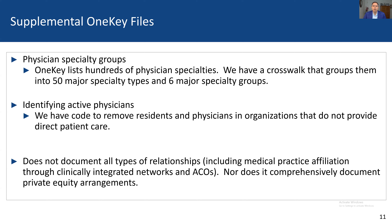We have 1.1 million physicians, but if you're interested in active physicians delivering outpatient care — for instance, providers relevant to an insurance company building a provider network — you'd want to exclude providers in correctional facilities or those not doing direct patient care. We have codes to remove residents and physicians in organizations that don't do direct patient care, which drops us from 1.1 million to maybe 700–800,000 physicians. A current challenge is that not all types of relationships are documented — clinical integrated networks and ACOs are there, but for questions related to private equity, for example, you'd need to pull data from elsewhere.